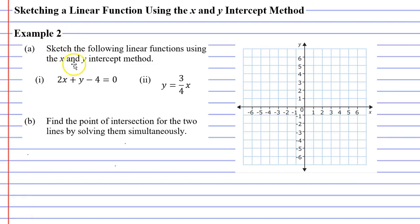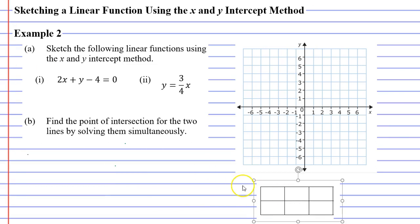Now to find the x and y intercept we need to look at what happens when x is zero and when y is zero. Sometimes it helps if we use a mini table of values where our top row is x and our bottom row is y. We're looking at what happens when x is zero and when y is zero.